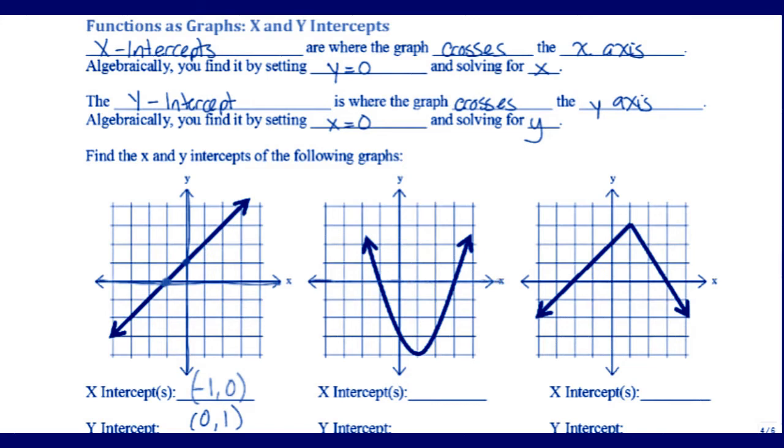On the next picture, on the x-axis, it looks like my graph crossed twice. I'm allowed to have more than one x-intercept.